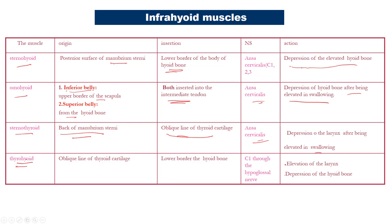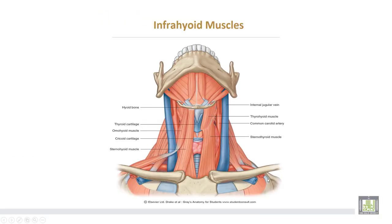The thyrohyoid muscle takes origin from the oblique line of the thyroid cartilage and is inserted into the lower border of the hyoid bone. Supplied from cervical one through the hypoglossal nerve. Action: elevation of the larynx and depression of the hyoid bone. This concludes the infrahyoid muscles — omohyoid with its superior belly, inferior belly, and intermediate tendon; sternohyoid; sternothyroid; and thyrohyoid.